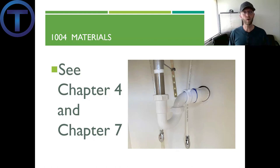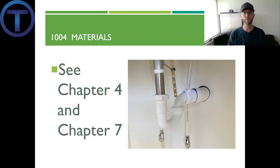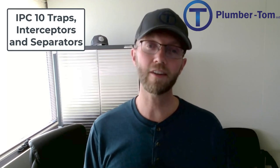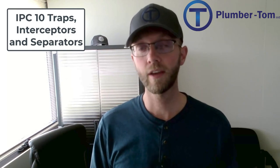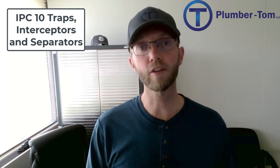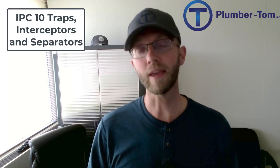Finally we get to Section 1004, which talks about materials. This chapter has very little to say about that — they simply say that if you want to know more about materials for sinks, fixtures, or drainage systems, you can go to Chapter 4 and Chapter 7 of the International Plumbing Code. That concludes this presentation of IPC Chapter 10 on Traps, Interceptors, and Separators. Make sure to install traps correctly, install the right types, and if you're ever involved with grease interceptors or separators — make sure to plug your nose.